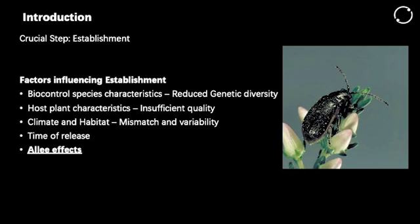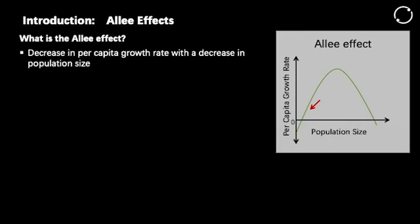Today I want to speak more about the Allee effects. So what is the Allee effect? It is basically a decrease in per capita growth rate or individual fitness with a decrease in population size. There are several causes of the Allee effect — basically, some organisms just do better when they're in a bigger group. One of the causes is mate finding failure: when there are too few in the population, they simply can't find each other.